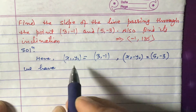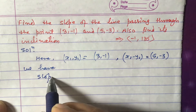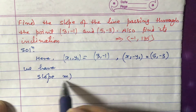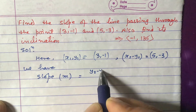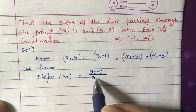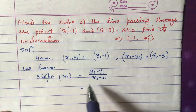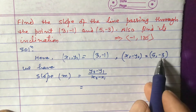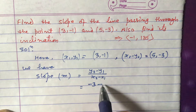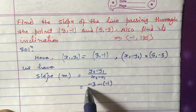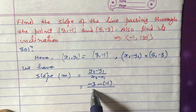Now, the formula to find slope — slope represented by m — is equal to y2 minus y1 divided by x2 minus x1. This is equal to y2, which is minus 3, minus y1, which is minus 1, divided by x2, which is 5.